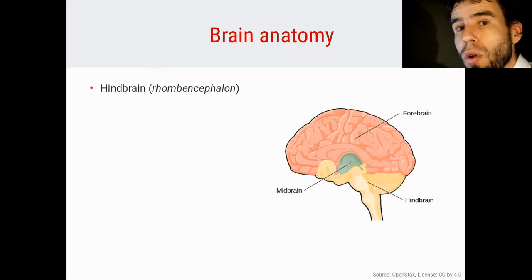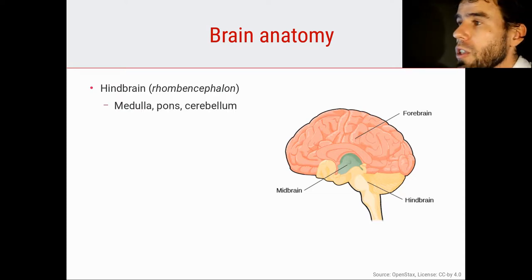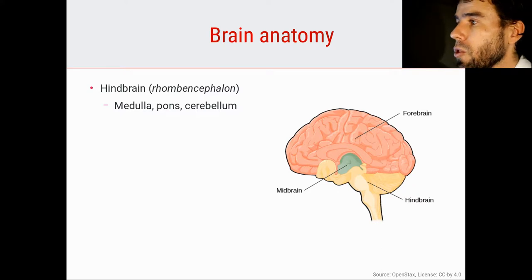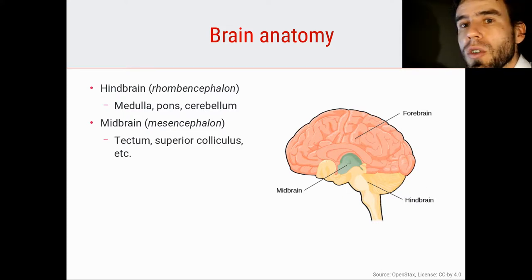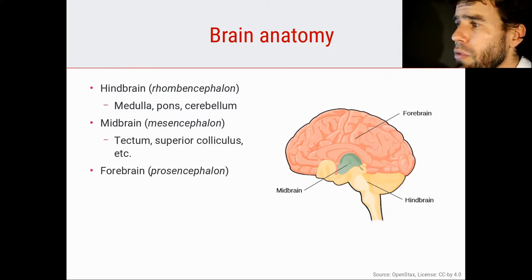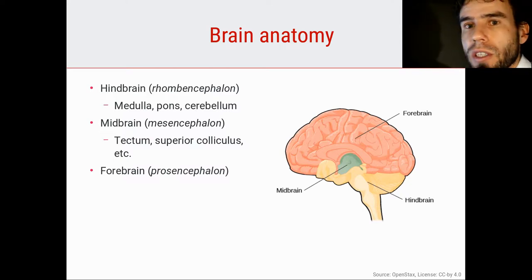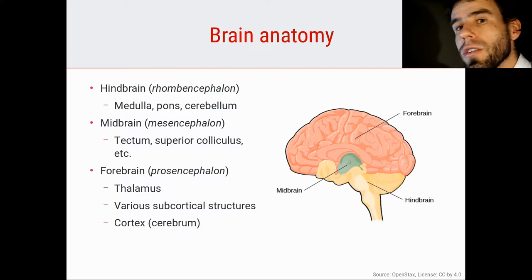The brain is often divided in the way depicted here. We have the hindbrain, or the rhombencephalon, which consists of brain areas such as the medulla, the pons, and the cerebellum. We have the midbrain, or the mesencephalon, which includes the tectum and the superior colliculus. And the forebrain, or the prosencephalon, which consists of the thalamus, various subcortical structures, and the cortex, or the cerebrum.